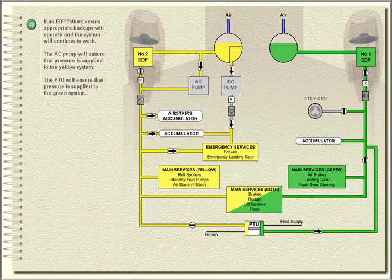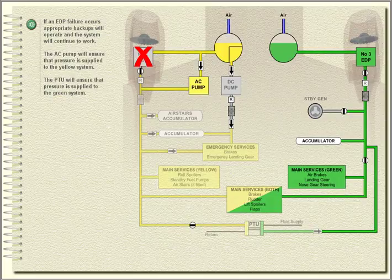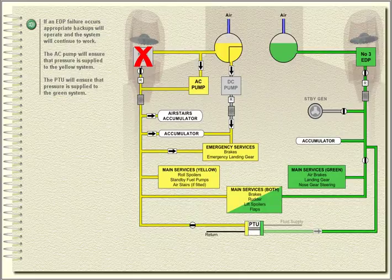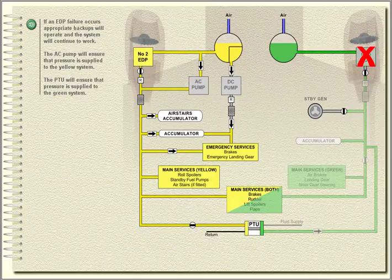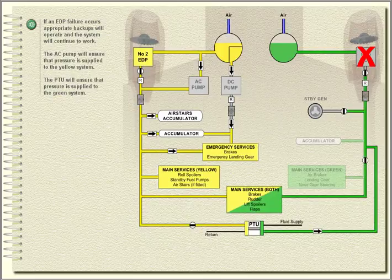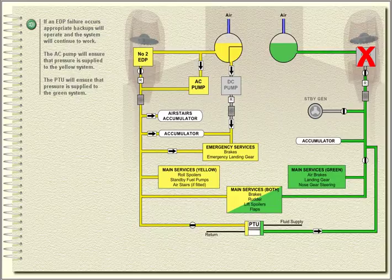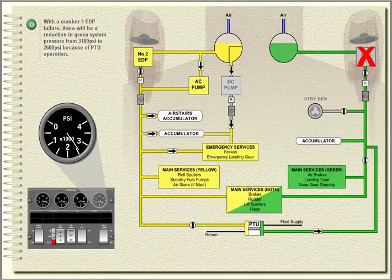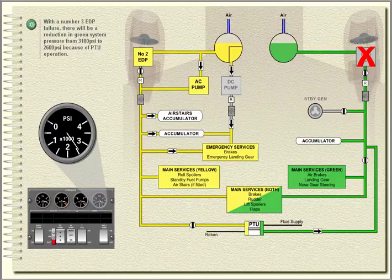The AC pump will ensure that pressure is supplied to the yellow system. The PTU will ensure that pressure is supplied to the green system. With a number 3 EDP failure, there will be a reduction in green system pressure from 3,100 PSI to 2,600 PSI because of PTU operation.